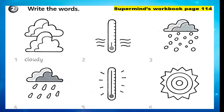Now we will do some exercises about the weather. You need to write the words — look at the picture and write the correct word according to the picture. Number one is already done for you: Cloudy. Number two, what is that?